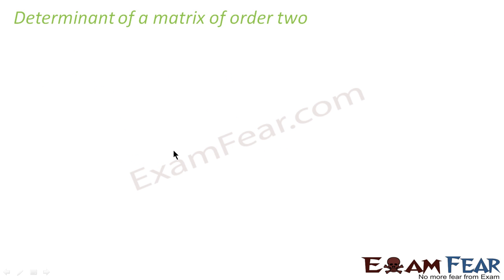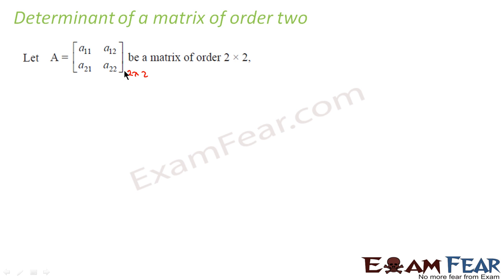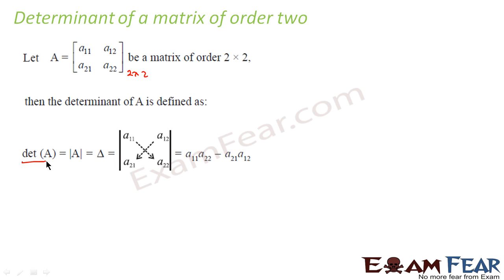Now let's find the determinant of a matrix of order 2×2. If matrix A has 4 elements arranged in 2 horizontal and 2 vertical sets, it is a 2×2 matrix. The determinant — written as det(A), |A|, or △ — is defined as A₁₁·A₂₂ minus A₁₂·A₂₁: multiply the diagonal elements and subtract the product of the remaining two.